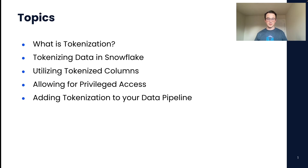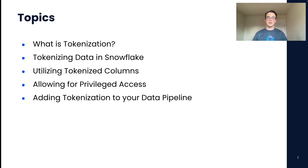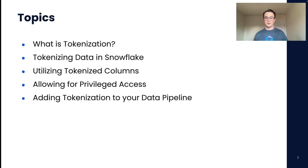There are multiple topics we're going to cover for this demonstration. First, we're going to talk about what is tokenization. Then we're going to get into tokenizing data in Snowflake and how we can configure the app to tokenize different columns. We're going to talk about how we can utilize those tokenized columns so that your business can still run, and how we can allow for privileged access. Finally, we're going to go over how we can add tokenization to your data pipeline so that your business processes are not impacted when you're adding new data into your system.